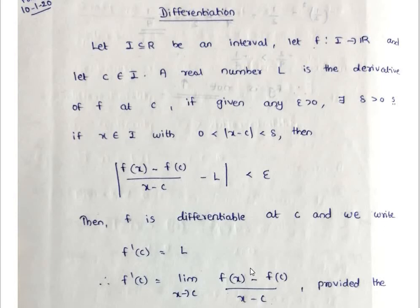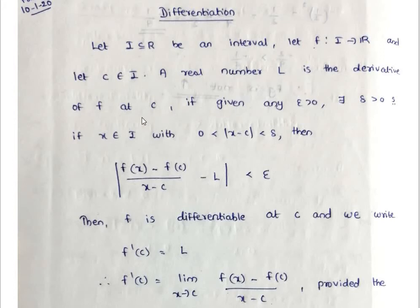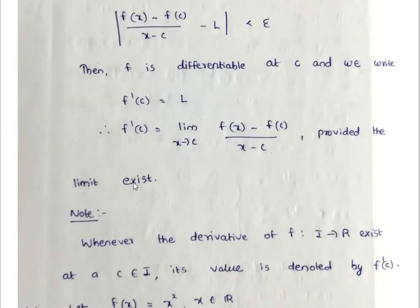Now if we write the epsilon-delta definition, we write delta in the same way: 0 less than |x - c| less than delta, and then |f(x) - f(c) / (x - c) - f'(c)| less than epsilon. Writing the definition with l as the derivative on an interval: a real number l is the derivative of f at c if given epsilon greater than 0, there exists delta greater than 0 such that if x is in I with 0 less than |x - c| less than delta, then |f(x) - f(c) / (x - c) - l| less than epsilon. So f'(c) equals the limit as x tends to c of f(x) minus f(c) divided by x minus c, provided the limit exists.